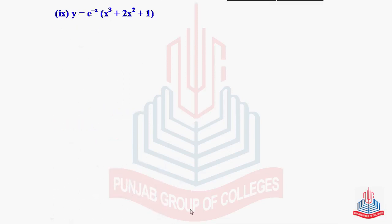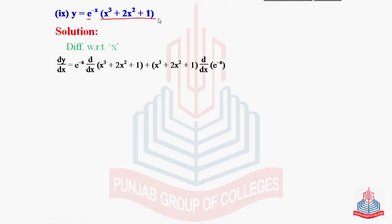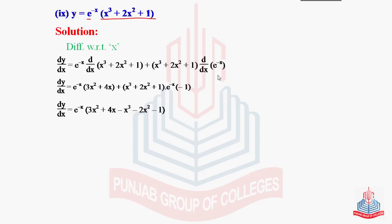Part 9: y = e^(-x)(x³ + 2x² + 1). Again this is a product of two functions. Using the product theorem: e^(-x) as it is times the derivative of (x³ + 2x² + 1), plus (x³ + 2x² + 1) as it is times the derivative of e^(-x). You can simplify this yourself as it is an easy question.